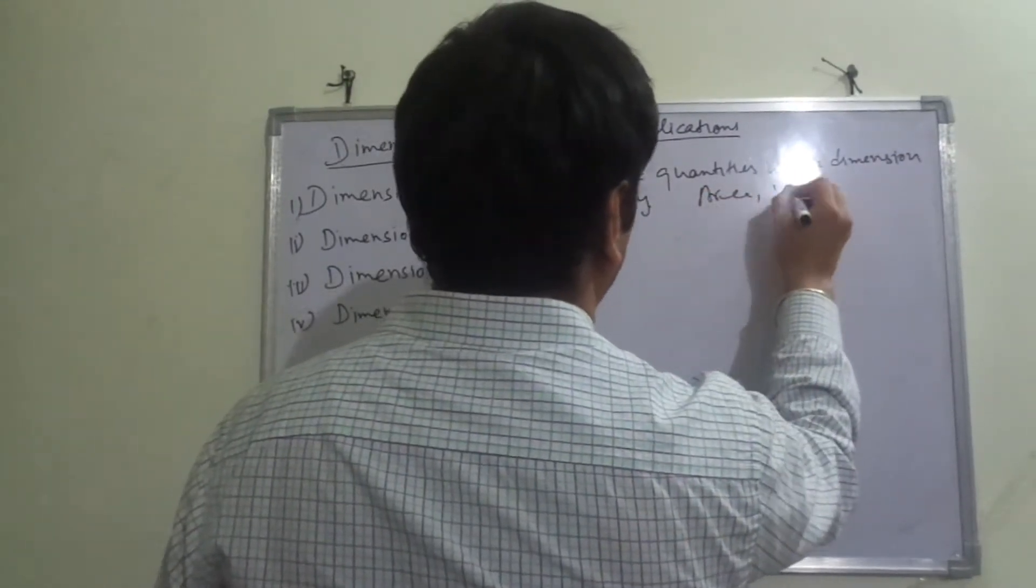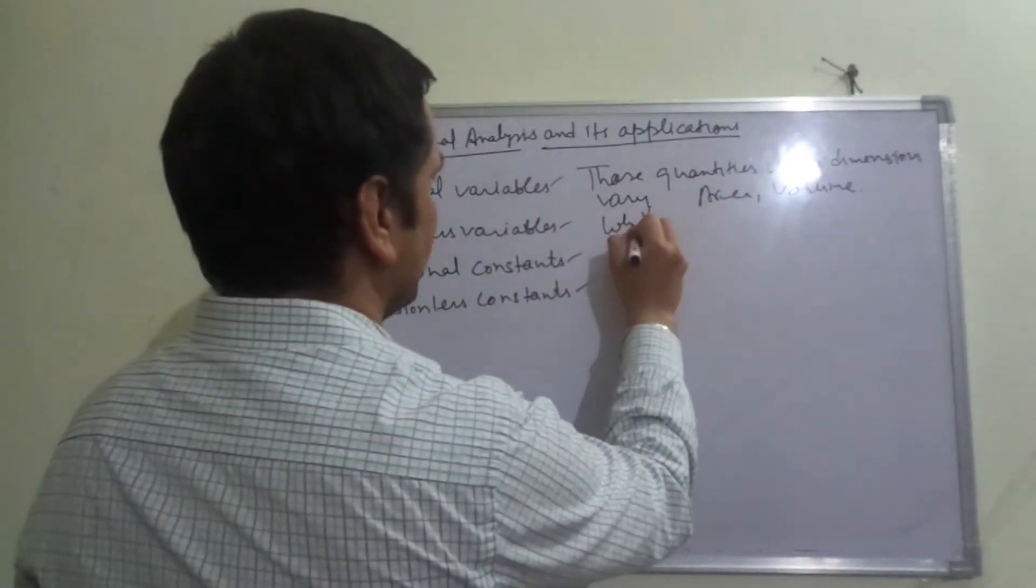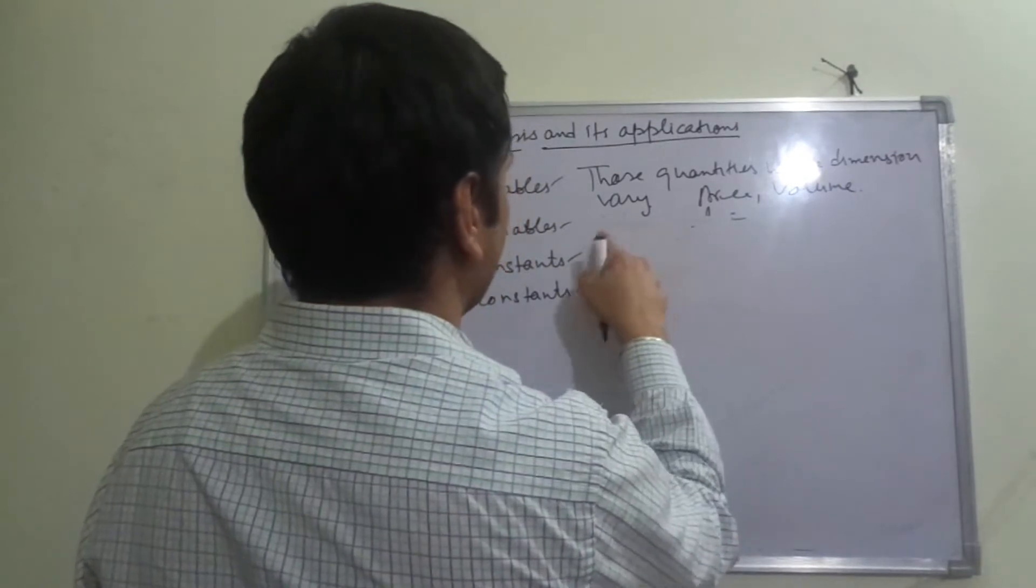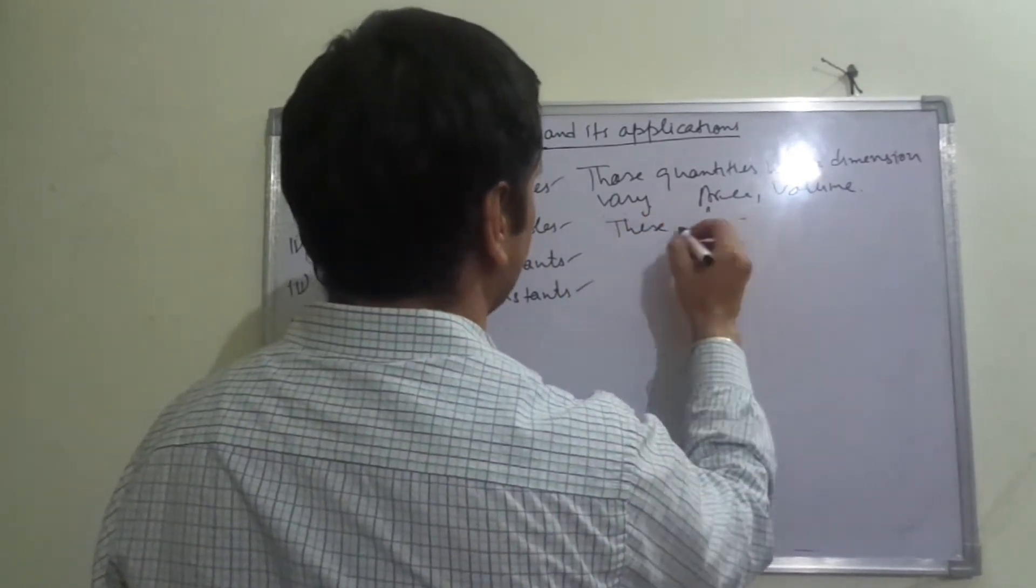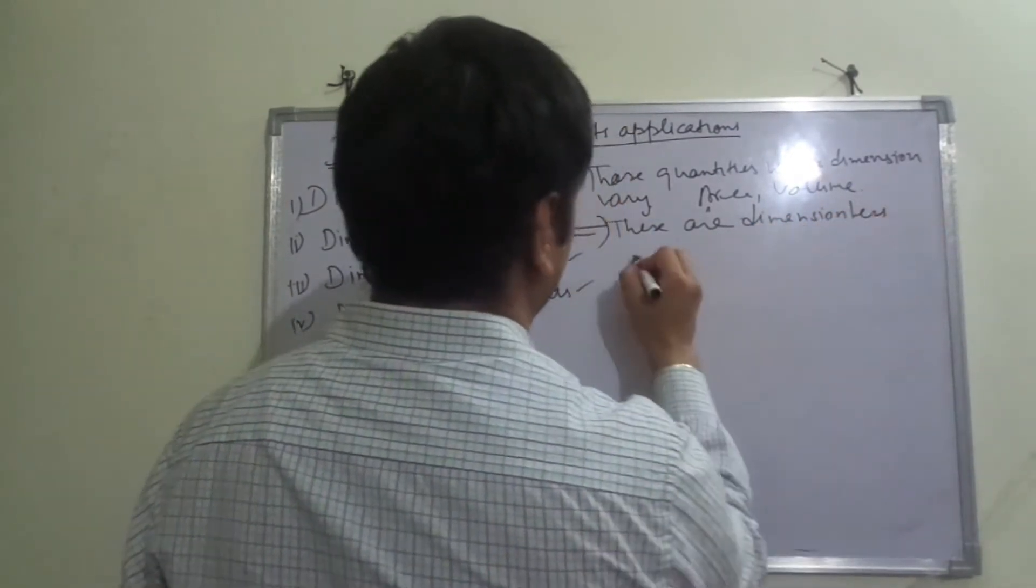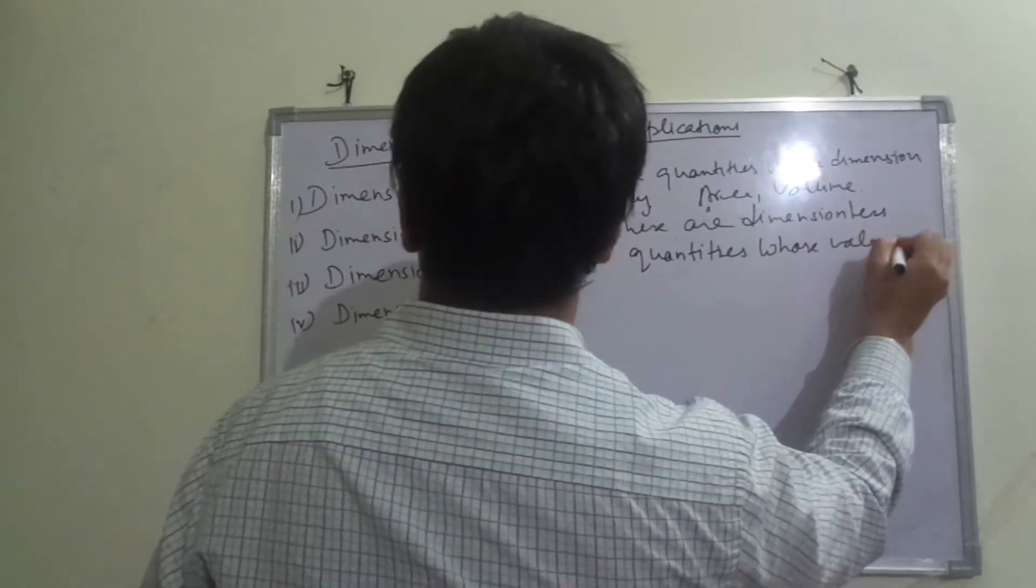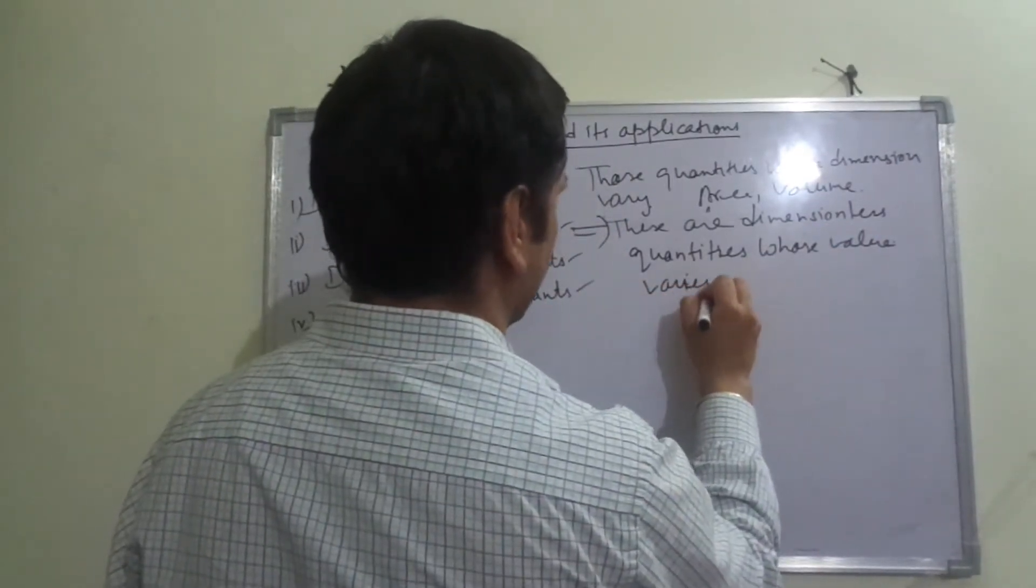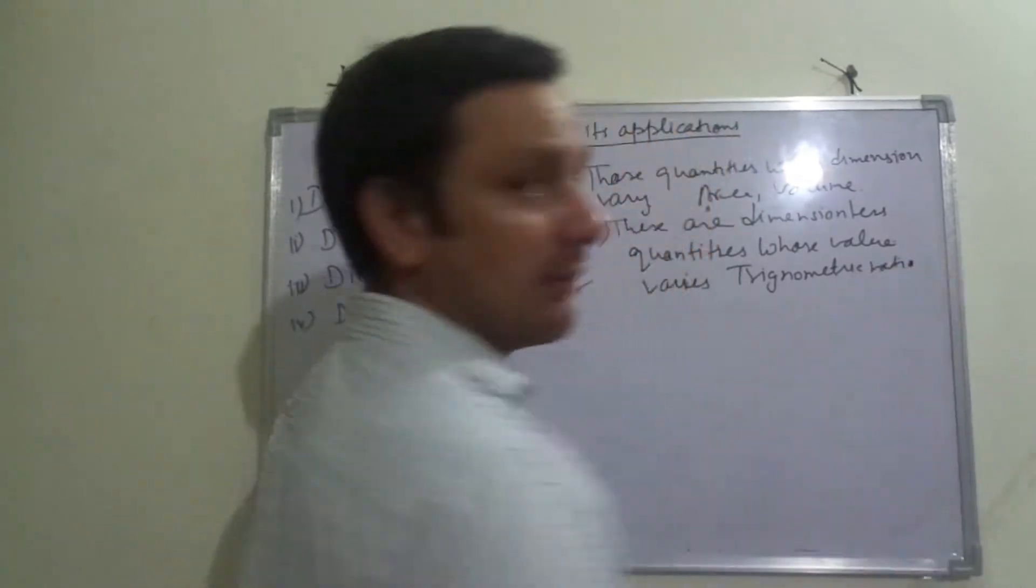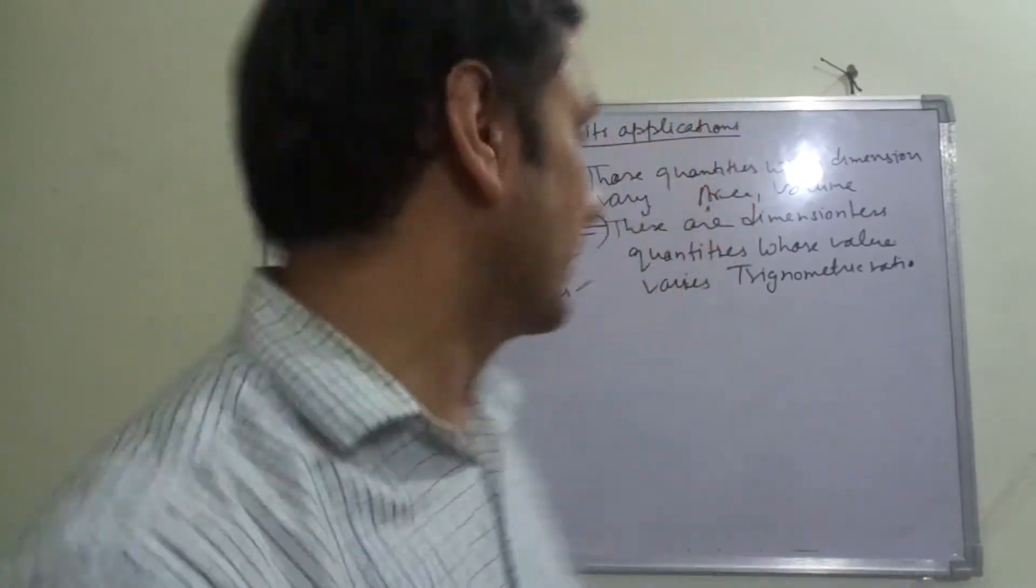Area, volume. Now dimensionless variables, whose value - these are those quantities, these are dimensionless quantities whose value varies. Trigonometric ratio.